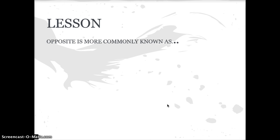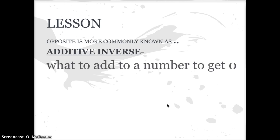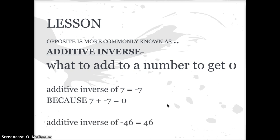But the opposite of a number is actually more commonly known as the additive inverse, because the additive inverse is whatever you need to add to a number to get zero. And so the additive inverse of seven is the opposite of seven—it's negative seven. Because seven plus negative seven is zero. The additive inverse of negative 46 is 46, because negative 46 plus positive 46 is zero. It brings you right back to the middle of the number line.